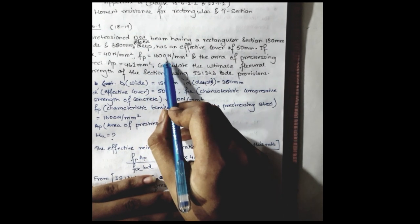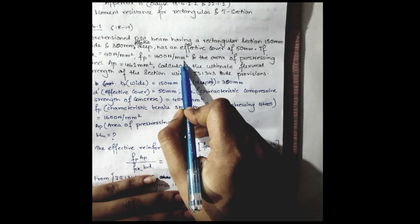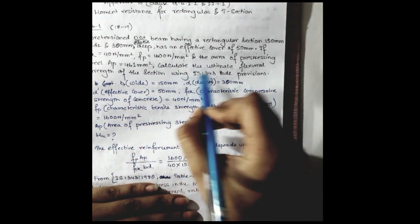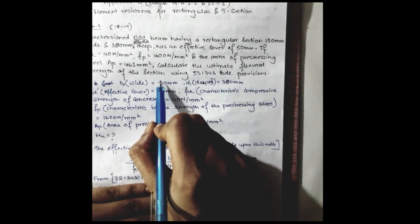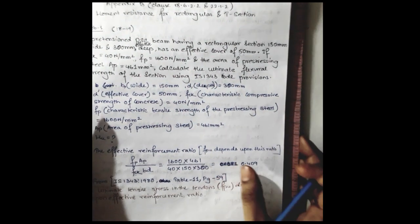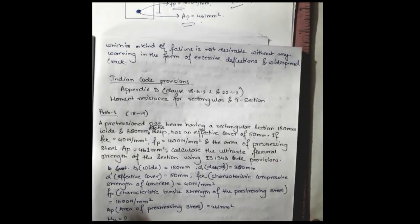fp equals 1600 Newton per millimeter square and the area of pre-stressing steel Ap is 461 millimeter square. Calculate the ultimate flexural strength of this section using IS 1343 code provisions.